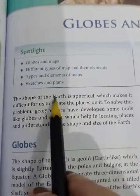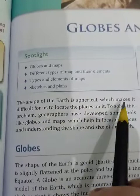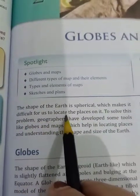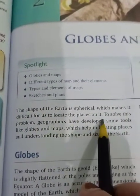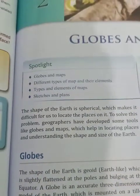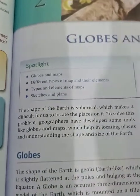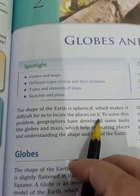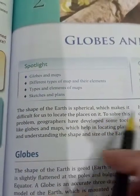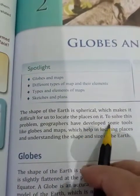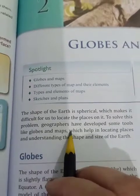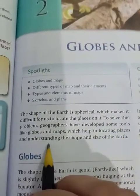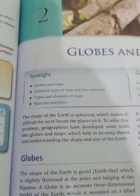The shape of the earth is spherical, which makes it difficult for us to locate the places on it. The earth is in a spherical shape, and this is why we have a lot of difficulty in showing the places on it. To solve this problem, geographers have developed some tools like globes and maps, which help in locating places and understanding the shape and size of the earth.